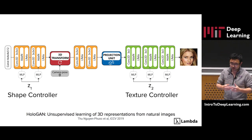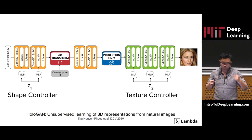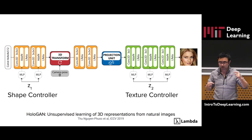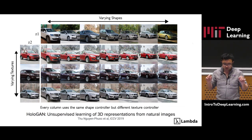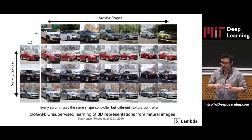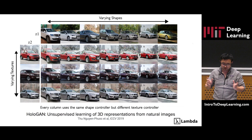Another surprise is that the network is able to further decompose the appearance into shape and texture. As a test, we fit two different control vectors — one to the 3D part of the network and the other to the 2D part of the network. It turns out the controller fit into the 3D part controls the shape, and the controller fit into the 2D part controls the texture. Every row in this image uses the same texture controller but a different shape controller, and every column uses the same shape controller but a different texture controller. This is truly amazing, because it reminds me of the vertex shader and the fragment shader in a conventional computer graphics pipeline, where the vertex shader changes the geometry and the fragment shader does the coloring.